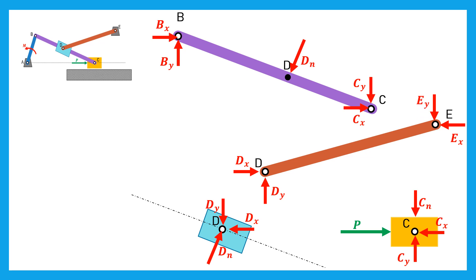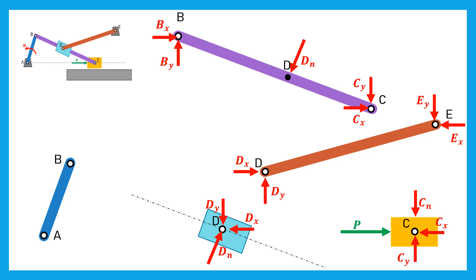Finally, we consider the bar AB. The bar AB is subjected to the external moment M, and to two reactions BX and BY which are opposite to the ones applied on the bar BC. Finally, the ground exerts two reactions AX and AY.